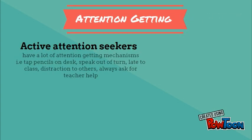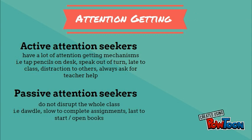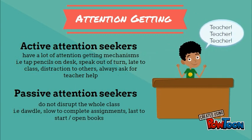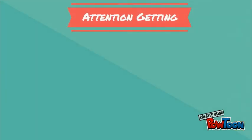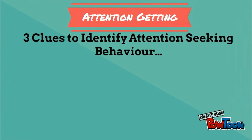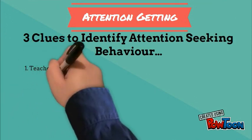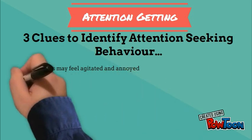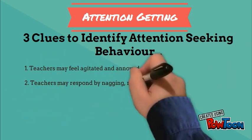The first type is Attention Getting. There are two types of attention seekers: active and passive. An active attention seeker displays a lot of attention-getting mechanisms — for example, a student may tap their pencil on their desk, speak out of turn, or ask for the teacher's help. A passive attention seeker does not disrupt the whole class, but instead may dawdle or be slow to complete their assignments and is the last to open their books.